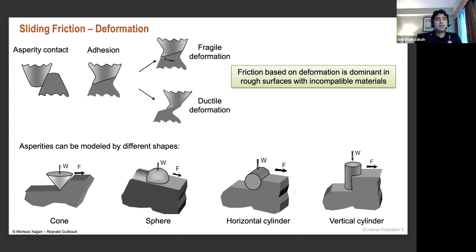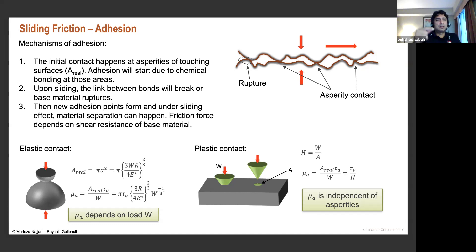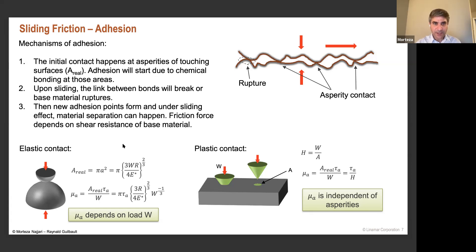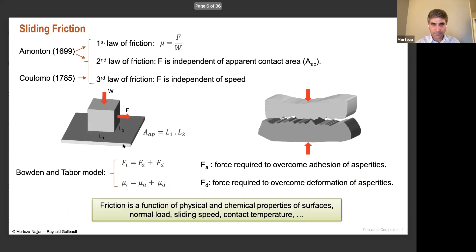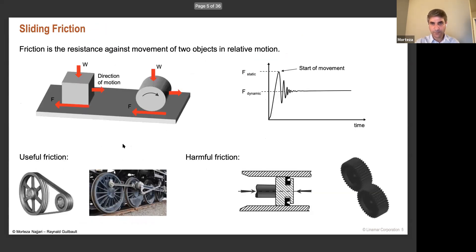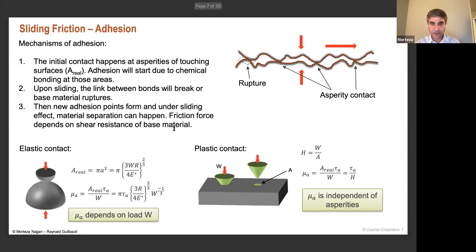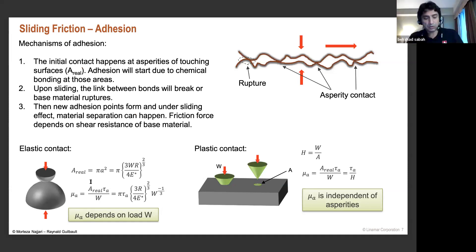A question was raised about the elastic contact diagram: the red arrows show the force W, and there is a question about movement since friction requires relative motion. The clarification is that in the friction laws, once we pass the initial static stage, the definition assumes constant speed — so this friction definition always assumes surfaces are moving against each other. It is essentially dynamic friction.